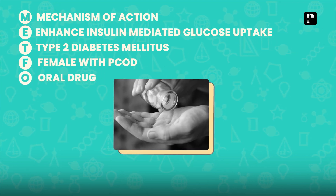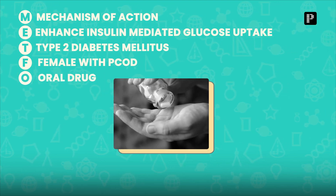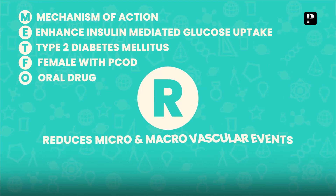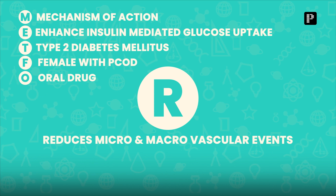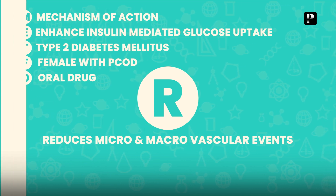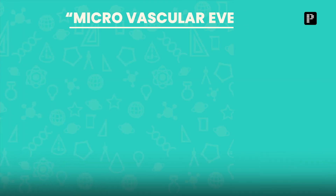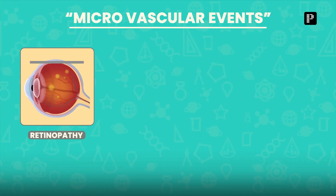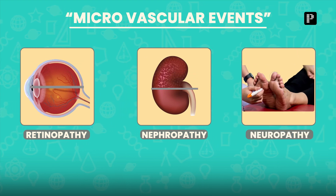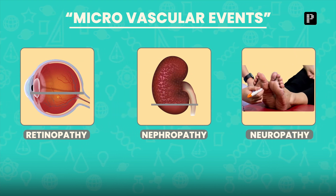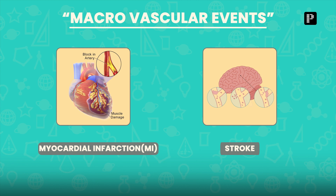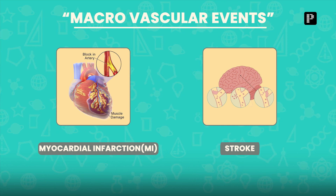O stands for oral drug — so it is not an injectable drug, it is an oral drug. Then R — it reduces micro and macrovascular events. The microvascular events include retinopathy, nephropathy, and neuropathy, all of which are reduced.